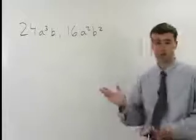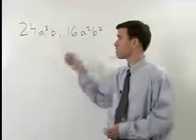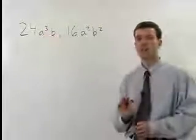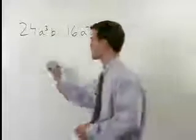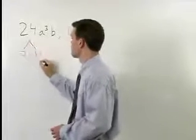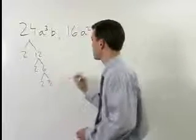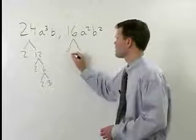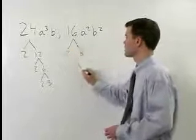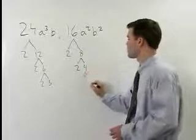First of all, let's take a look at the numbers or the coefficients 24 and 16 and set up a factor tree for each of those. 24 is 2 times 12 which is 2 times 6 which is 2 times 3. 16 is 2 times 8 which is 2 times 4 which is 2 times 2.